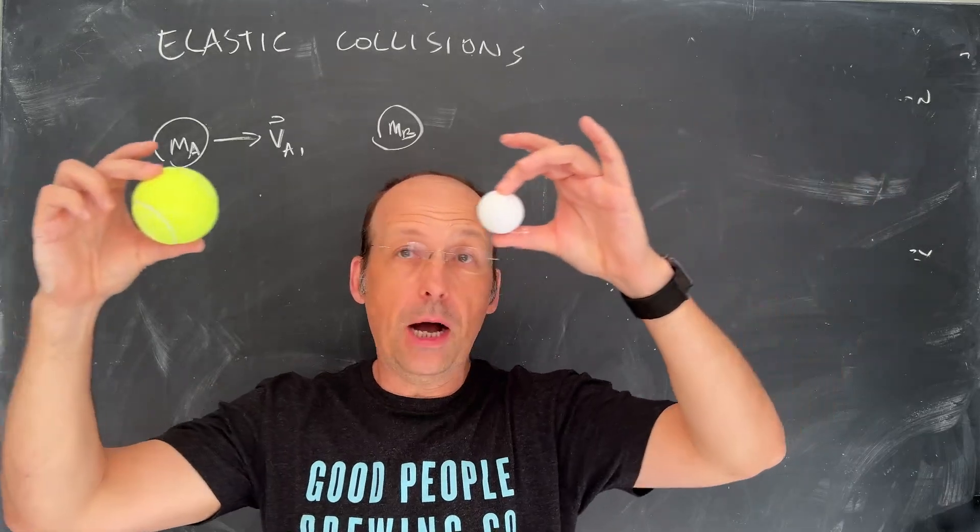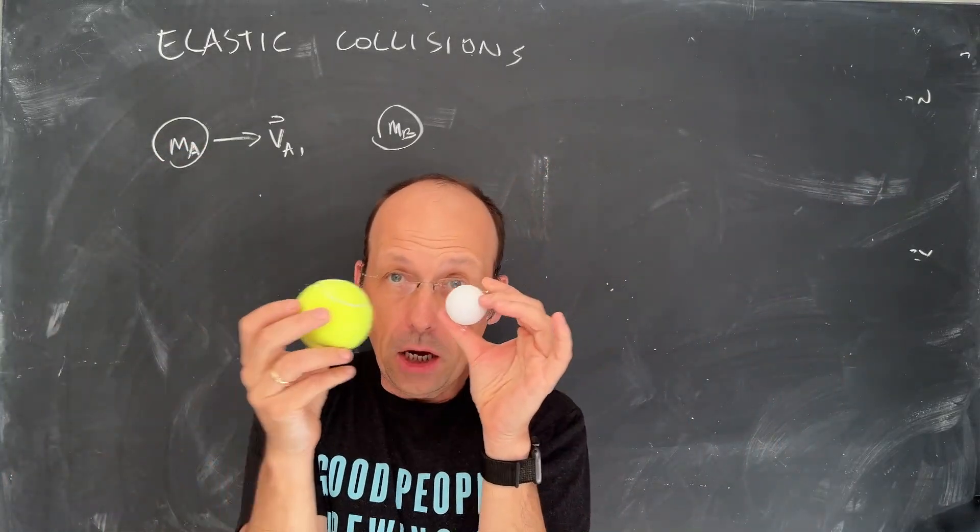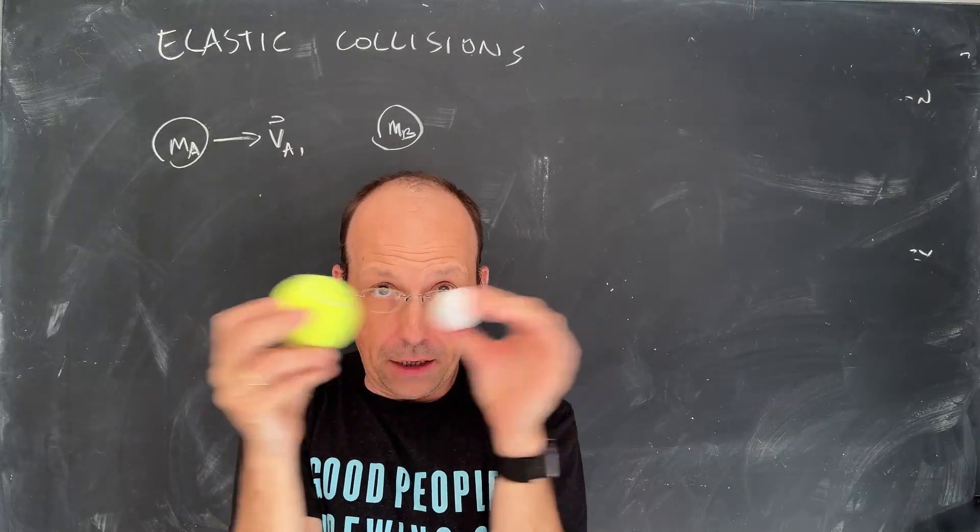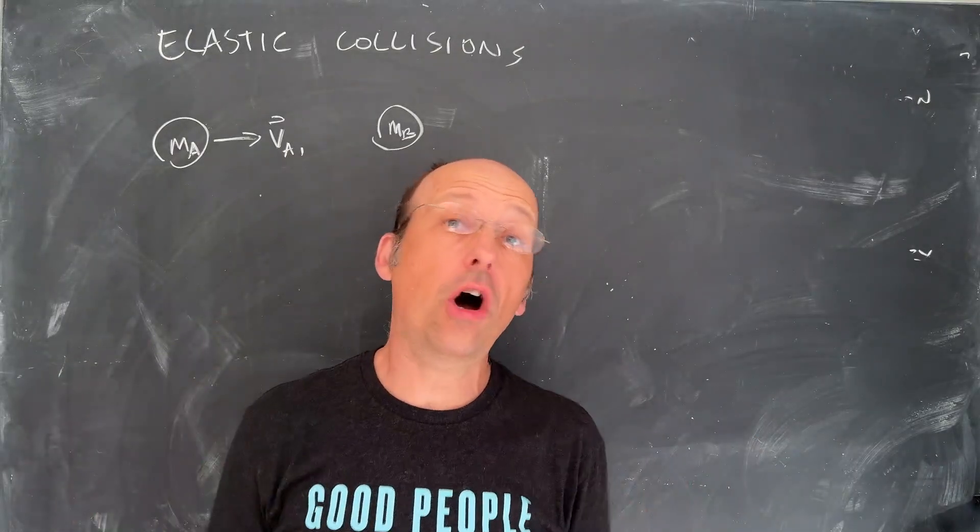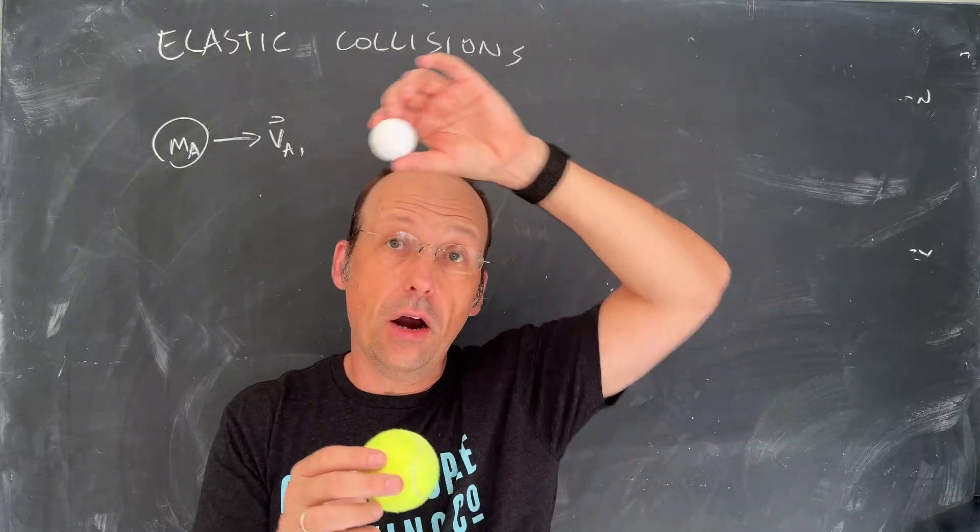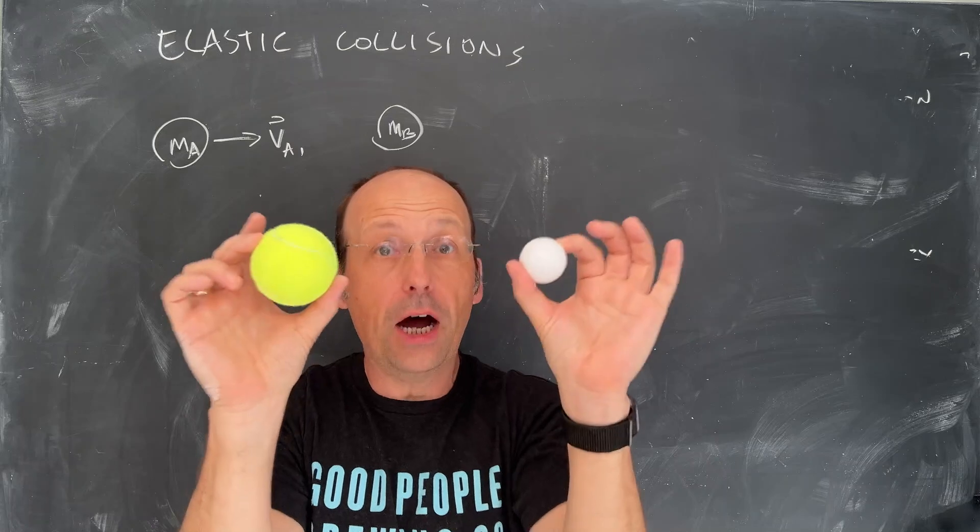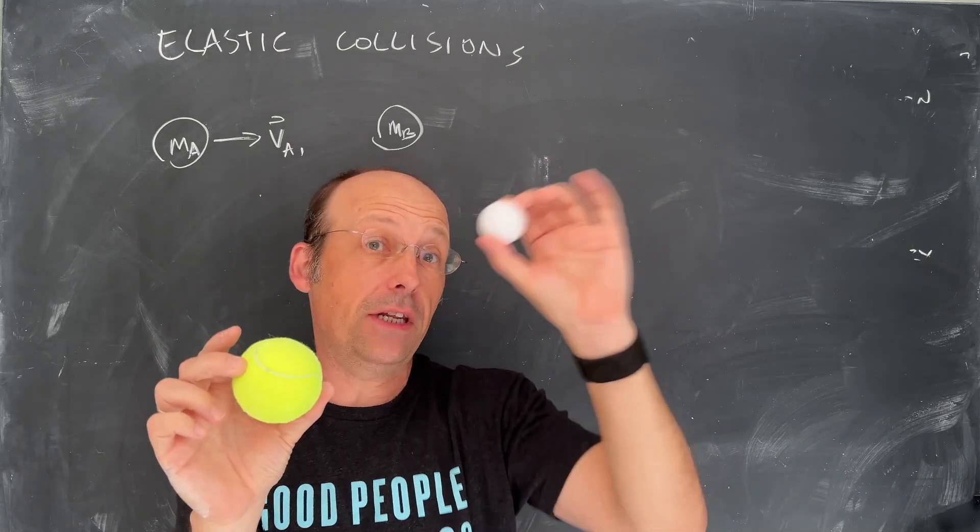So imagine I have these two objects moving together. Maybe even this one's stationary and this one comes in. It doesn't really matter. How do I model that collision? We saw in the, well, at least I showed in a video, for the moon orbiting the Earth, if I, as long as I can include both objects in the system, then that gravitational force.